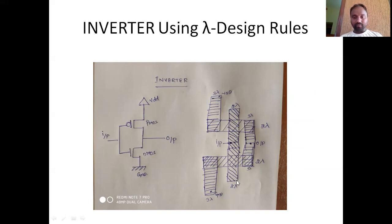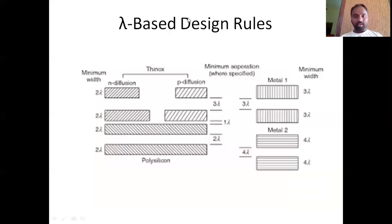And this is n-diffusion. The bars are closer compared to the p-diffusion. This is of width 2 lambda, polysilicon is 2 lambda. This is the gate terminal. For source and drain, you are using metals of width 3 lambda.